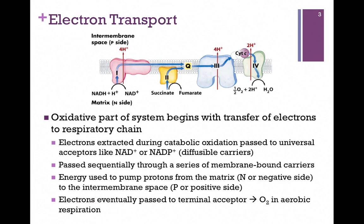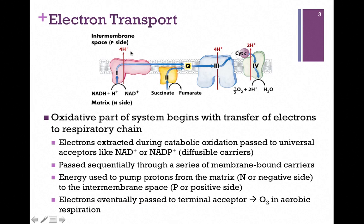The electrons are going to be passed sequentially to a series of components within this chain, and ultimately those electrons will be passed to a terminal carrier — in the case of aerobic respiration, that's oxygen. In the process of transferring those electrons, we're going to use the energy we gain to pump protons. They are pumped from the matrix to the intermembrane space. Since we're pumping protons to the intermembrane space, we're going to accumulate positive charges, and so we call that the P side.